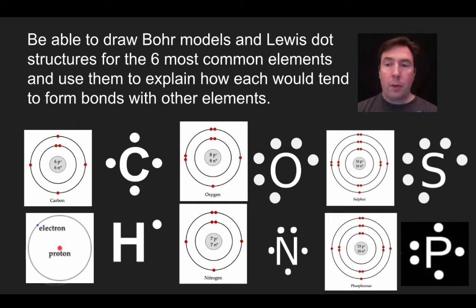Phosphorus is going to have a very similar Lewis dot structure to nitrogen, obviously, with the exception of the symbol, but just like when we saw with sulfur, it's actually much larger. So there's 15 protons, 16 neutrons, atomic mass of 31, and what we end up seeing is that's two electrons in the first shell, eight in the next shell, and five in that outermost shell.